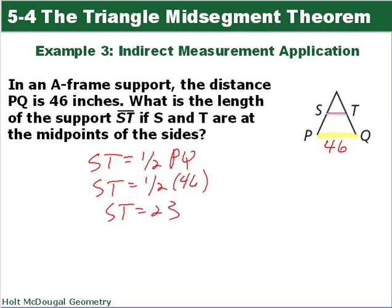Alright, so ST is a midsegment, so it's going to be half as big as PQ, and that's what I have here. ST is one half the length of PQ, which is going to be one half of 46, which ends up being 23. Nice job. Thank you.